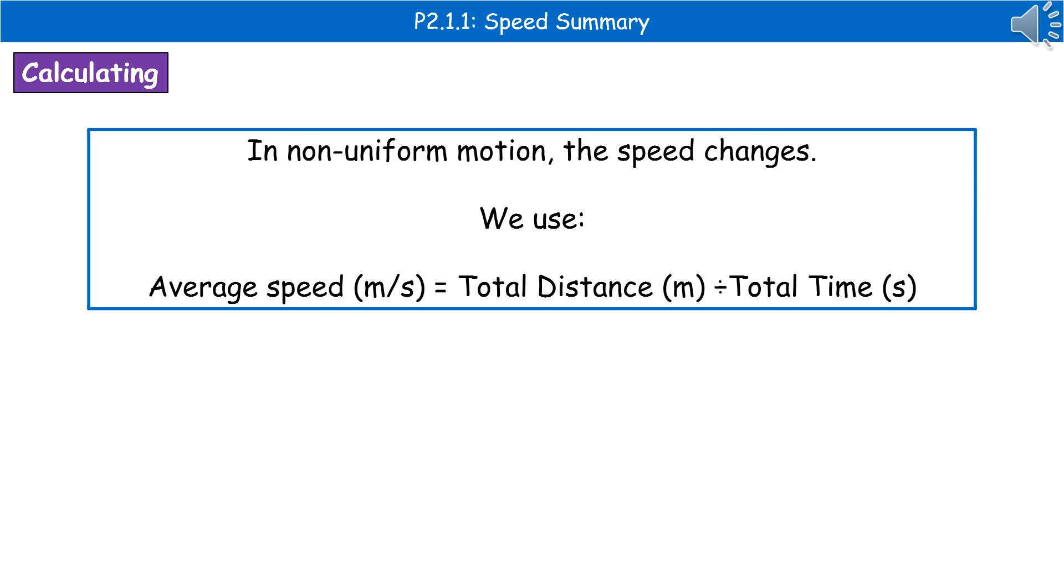In non-uniform motion, the speed will change, so we can't use the same equation. We have to tweak it slightly. What we say is that the average speed is the total distance divided by the total time.